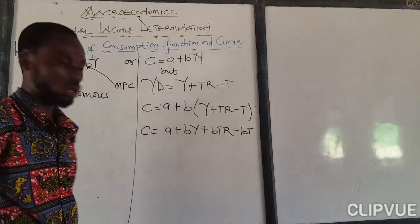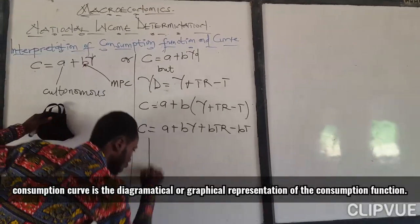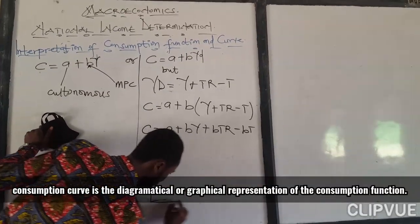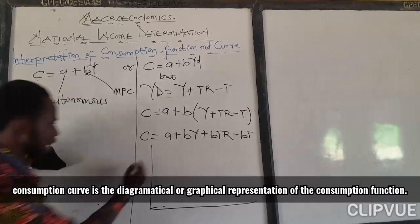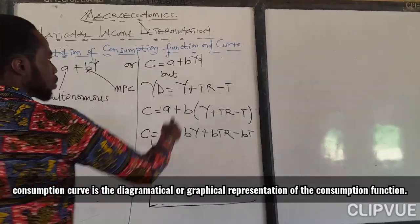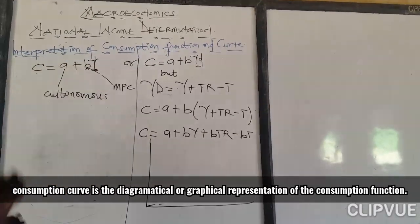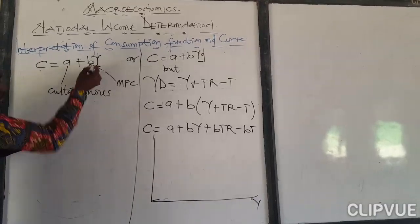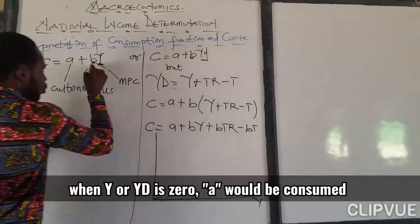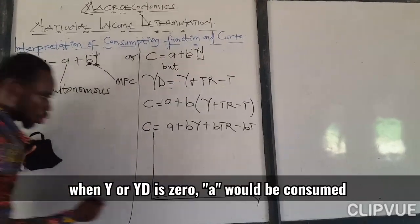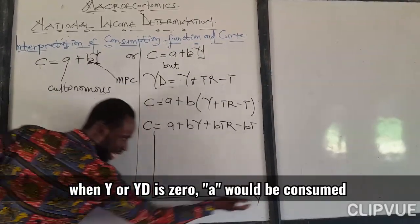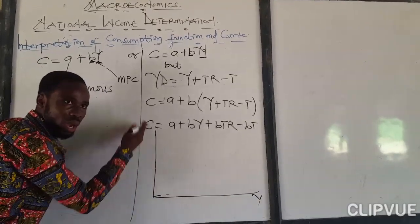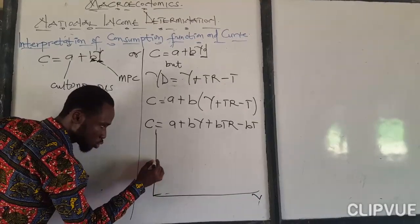Having understood this, let me give you the consumption curve. Consumption is plotted against disposable income or income. When income or disposable income is equal to zero, we consume A — that is the intercept on the vertical axis. So when the X-axis value is equal to zero, we are going to consume A.